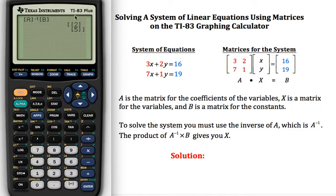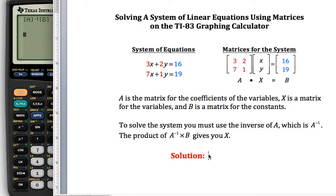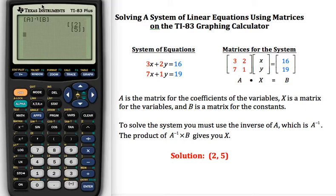And it will give me the X matrix showing the top number being my x answer solution and the bottom one being my y. So to read this then, the solution to this linear pair would be the ordered pair (2, 5).